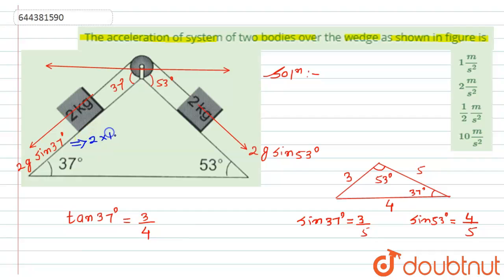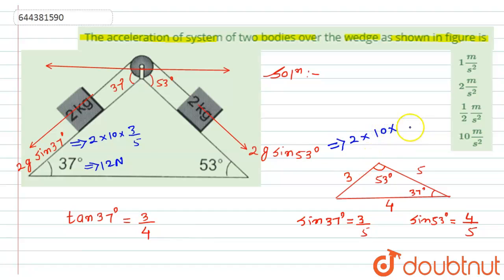So this force, 2g sin(37°), becomes 2 × 10 × (3/5), which equals 12 newtons. Similarly, the other force becomes 2 × 10 × sin(53°) = 2 × 10 × (4/5), which equals 16 newtons. Since 16 newtons is greater than 12 newtons, the acceleration will be in the direction of the 16 newton force.